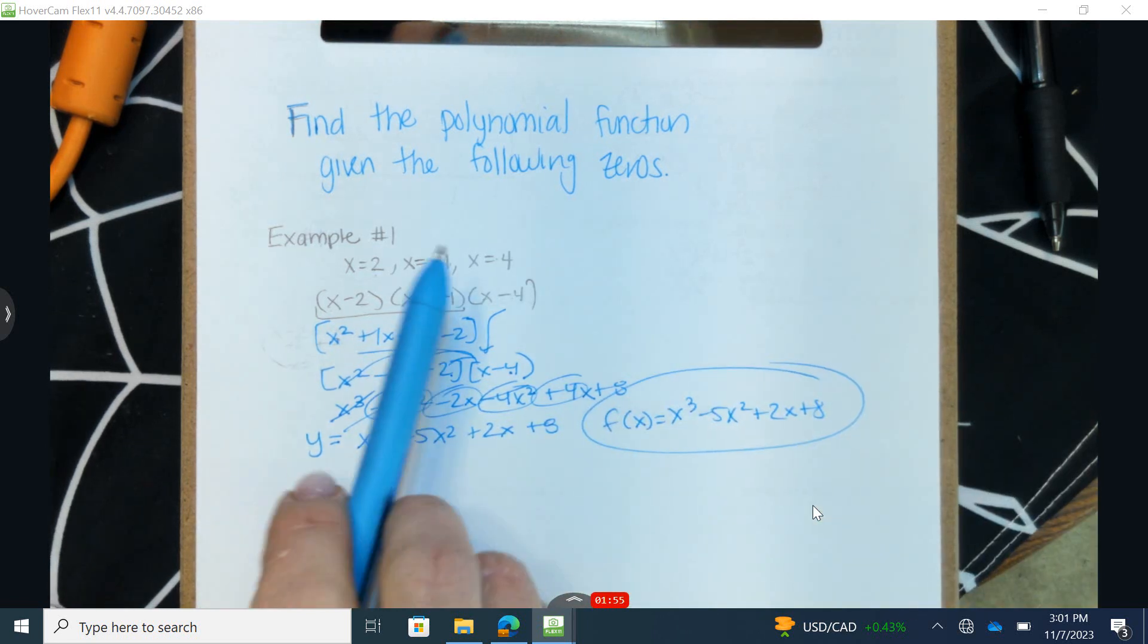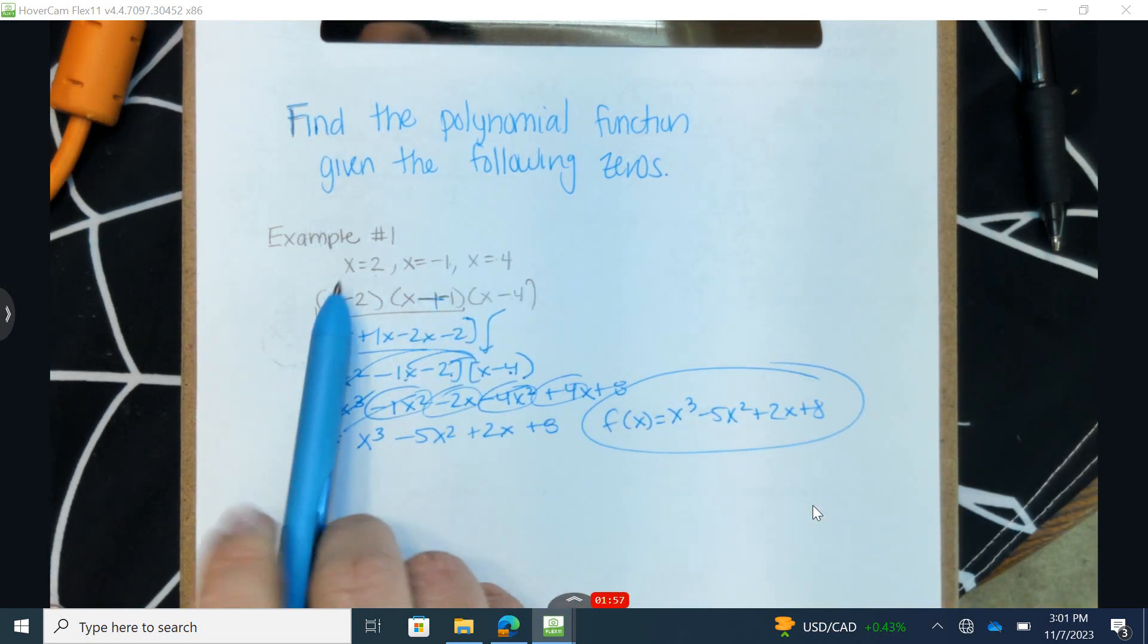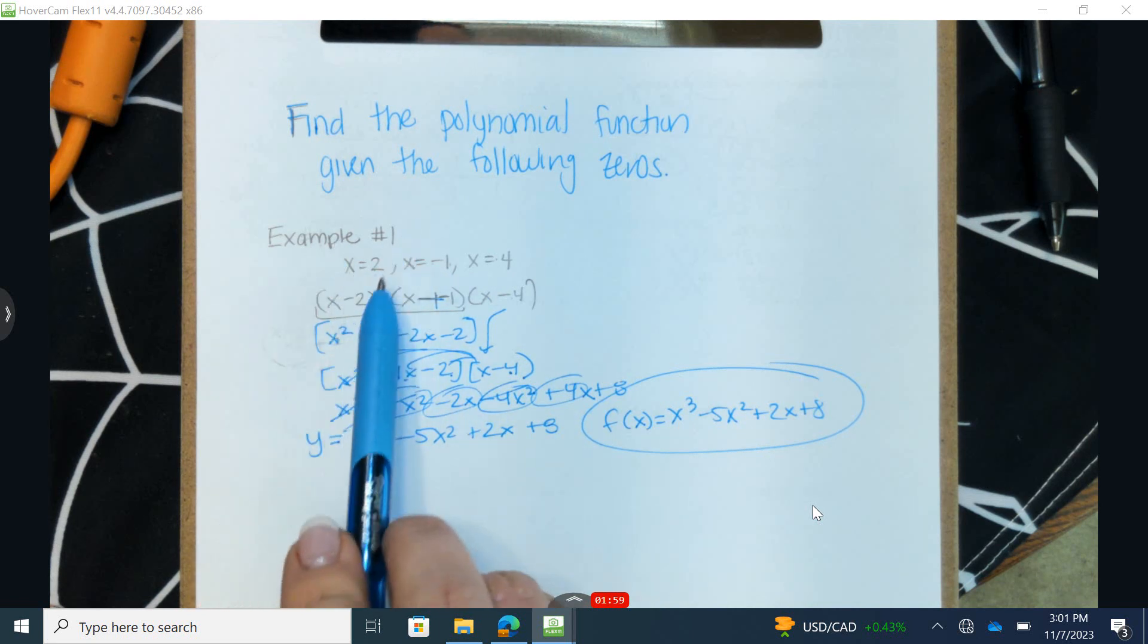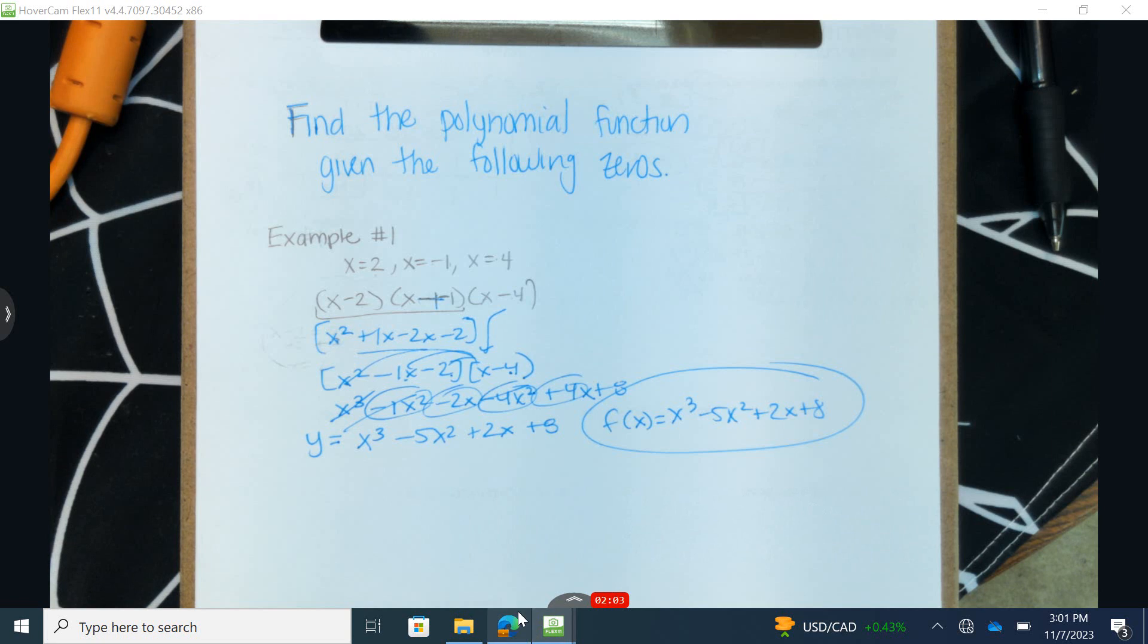So f of x equals x cubed minus 5x squared plus 2x plus 8. If we graph this, we would see that the x-intercepts occur at 2, negative 1, and 4. Those are all three real solutions. Let's look at examples.